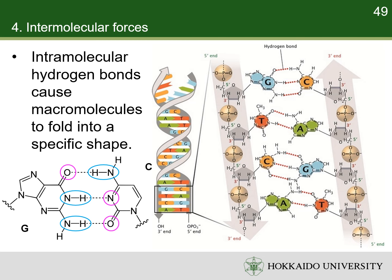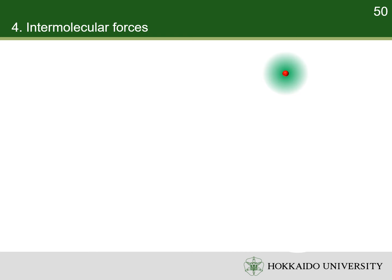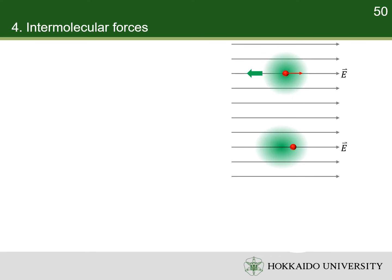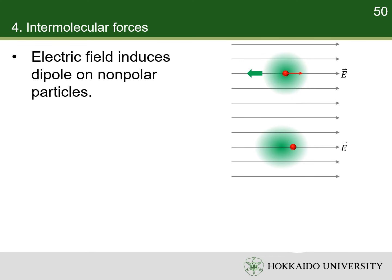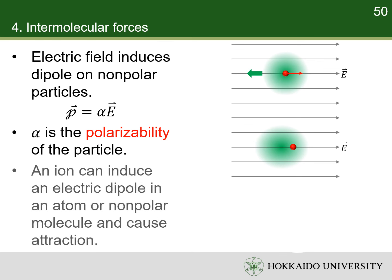Guanine cannot bind to guanine, adenine, or thymine. An atom or molecule consists of negatively charged electrons surrounding positively charged atomic nuclei. When subject to an electric field, the electrons and atomic nuclei are subject to opposite forces and undergo charge separation. Thus, when an atom or nonpolar molecule is subject to an electric field, it acquires an induced electric dipole moment. The ratio of its induced dipole moment to the local electric field is its polarizability. As a result, an ion can induce an electric dipole in an atom or nonpolar molecule and cause mutual attraction.